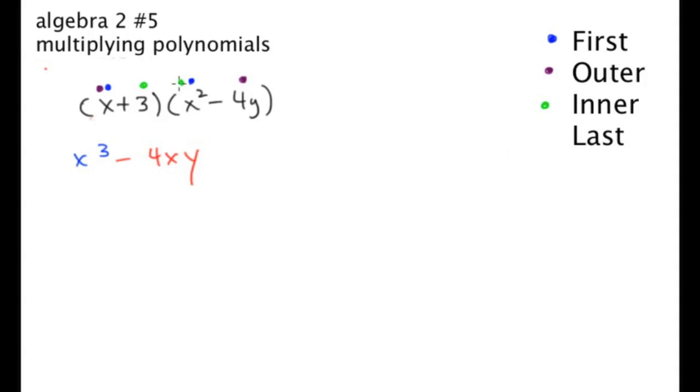Then it's inner, so now it's the inner terms, like so. Then finally, you have your last terms. So as you see, we're multiplying each term twice, and that's what we're supposed to be doing.